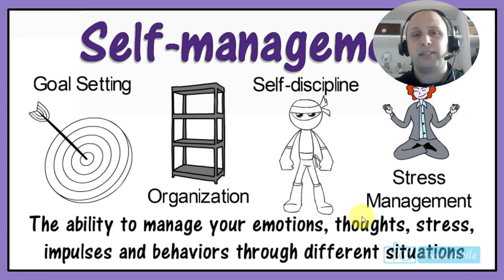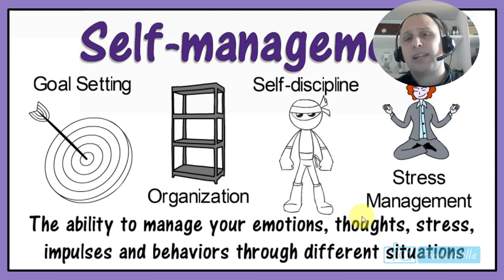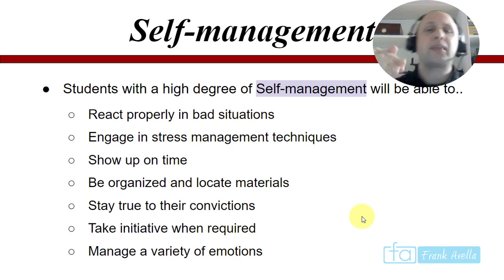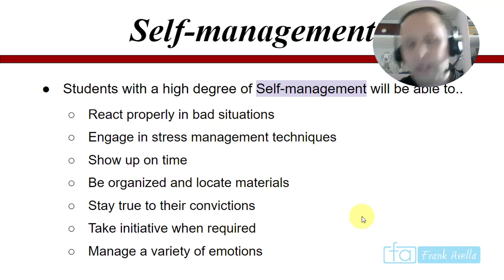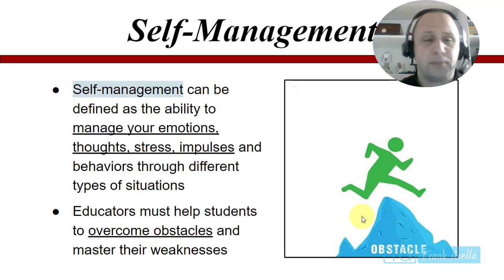We did self-awareness — let's go to self-management. You've got to manage your emotions and manage yourself. Examples include goal setting, staying organized, self-discipline, and stress management. Students with a high degree of self-management will be able to react properly in bad situations, engage in stress management techniques, show up on time, be organized, locate materials, stay true to their convictions, take initiative when required, and manage a variety of emotions. Self-management can be defined as the ability to manage your own emotions, thoughts, stresses, and impulses. Educators must help students overcome these obstacles.